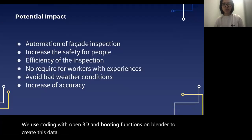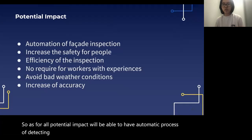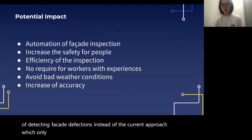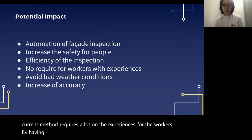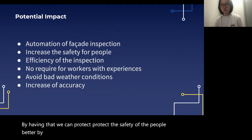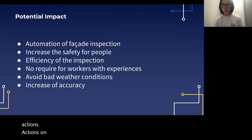As for our potential impact, we will be able to have an automatic process of detecting facade defects instead of the current approach, which only uses physical methods of examination. The current method requires a lot of experience from workers. By having automation, we can protect the safety of people better. By ensuring the efficiency of facade inspections, we can take actions on buildings that have bad conditions more quickly.